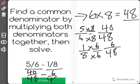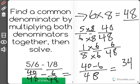So now my problem is 40/48ths minus 6/48ths. Remember, our denominator will stay 48. And all we'll have to do is 40 minus 6 to find out our answer is 34/48ths.